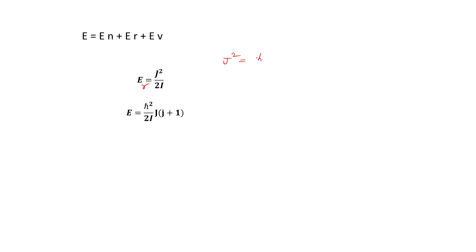These are the rotational energy levels. We know that J² equals ℏ² times J(J+1). After substituting this, you can obtain the rotational energy formula — this is a very important equation.